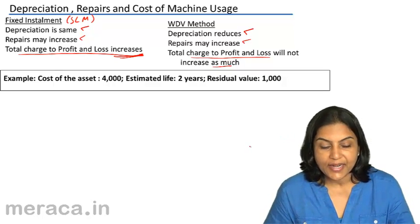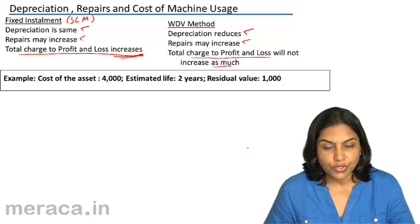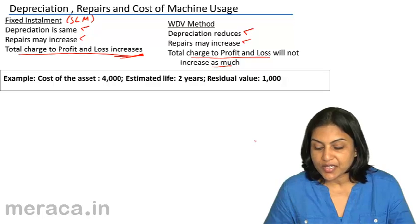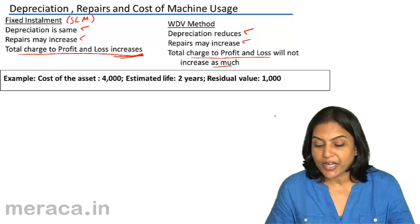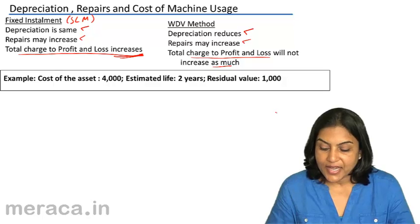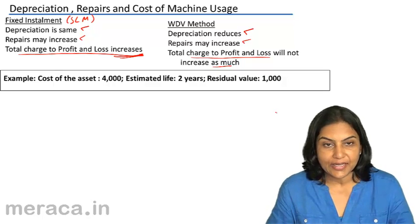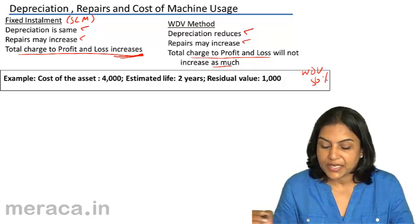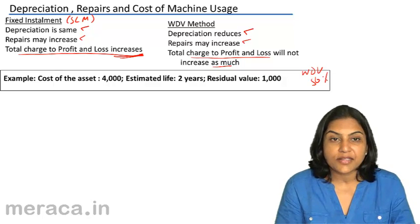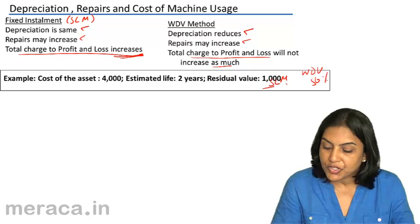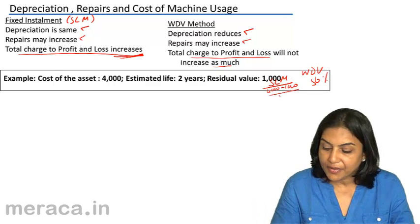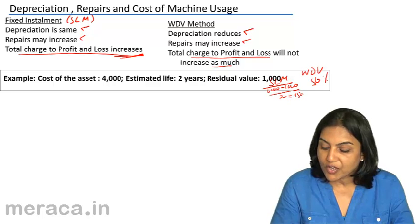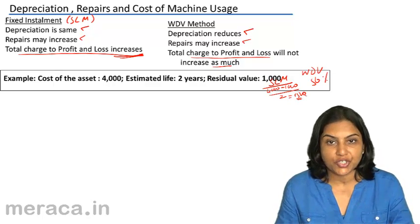We can also consider an example. Suppose we take an asset of 4000 with an estimated life of 2 years and a residual value of 1000. As computed earlier, the rate of depreciation was 50%. Under the straight line method, the depreciation would be 4000 minus 1000 — that is cost minus scrap — divided by a life of 2, giving us 1500 as the amount of depreciation each year.